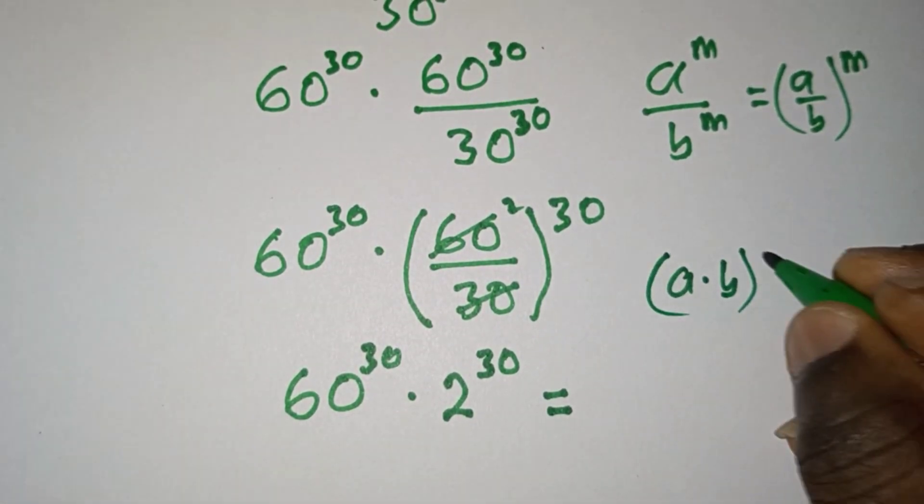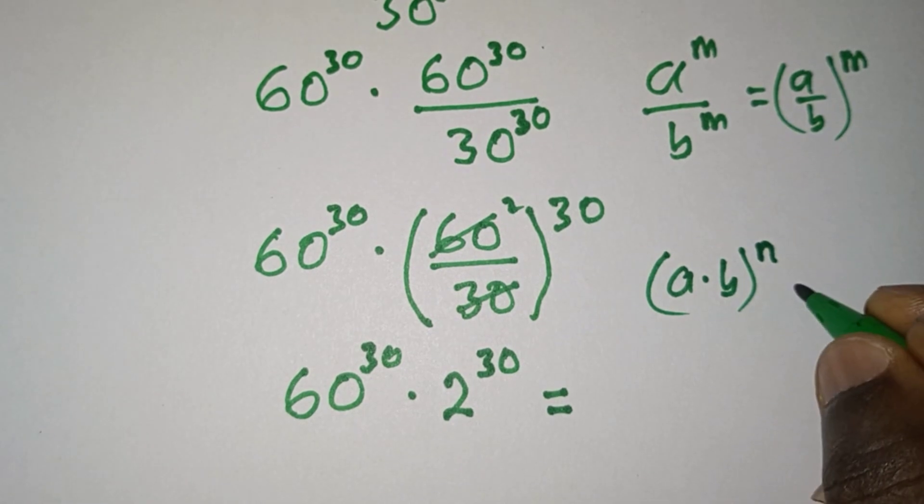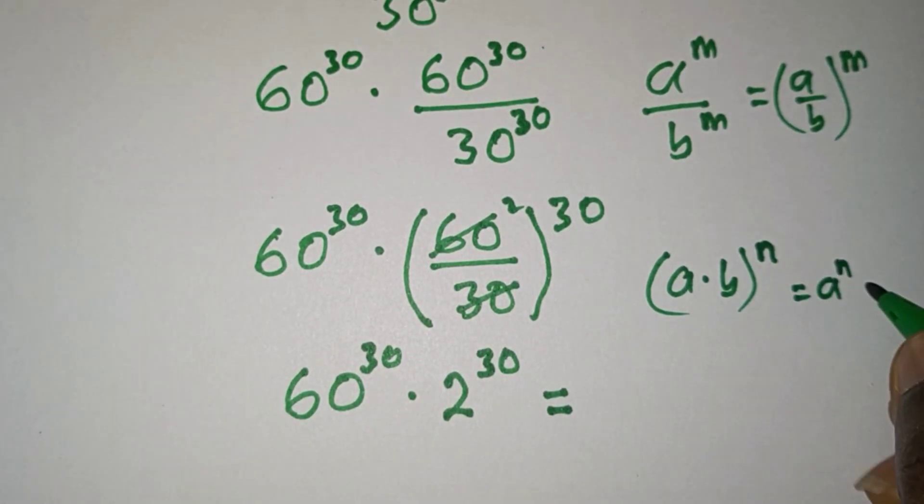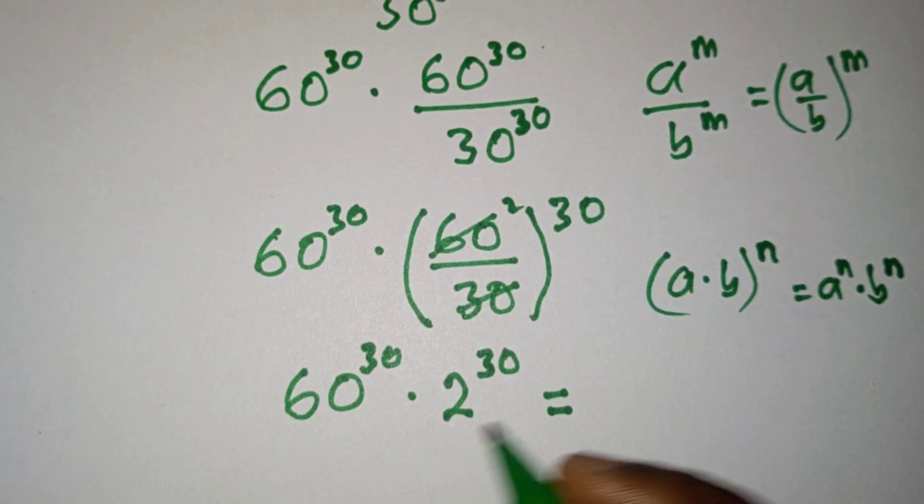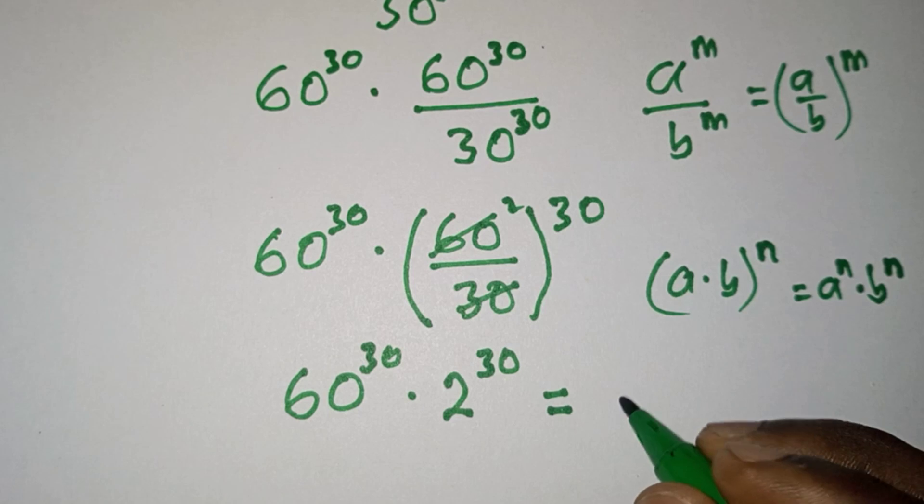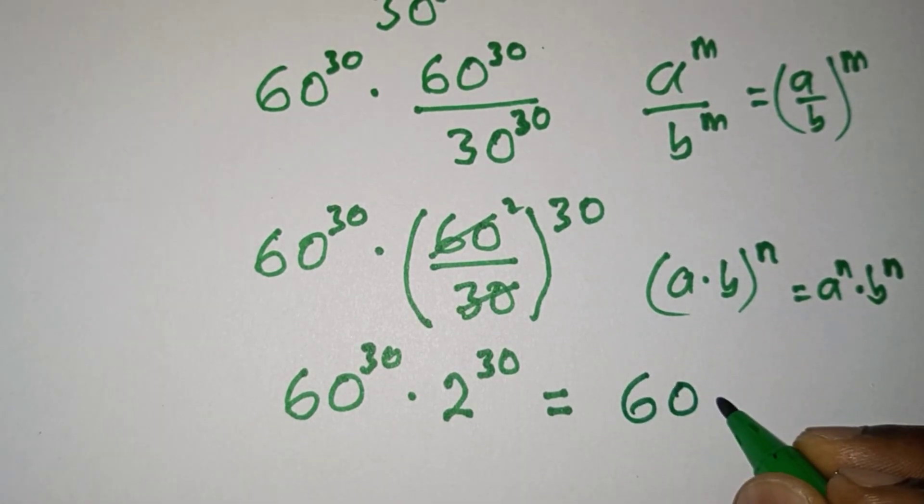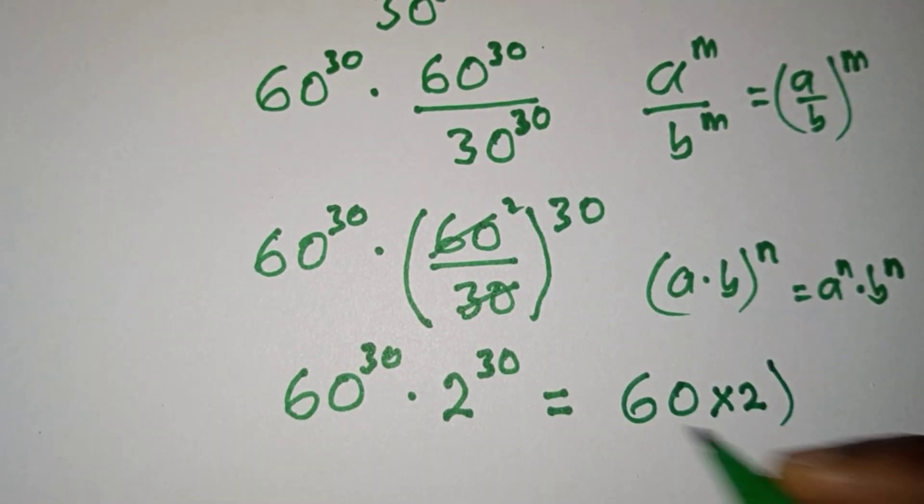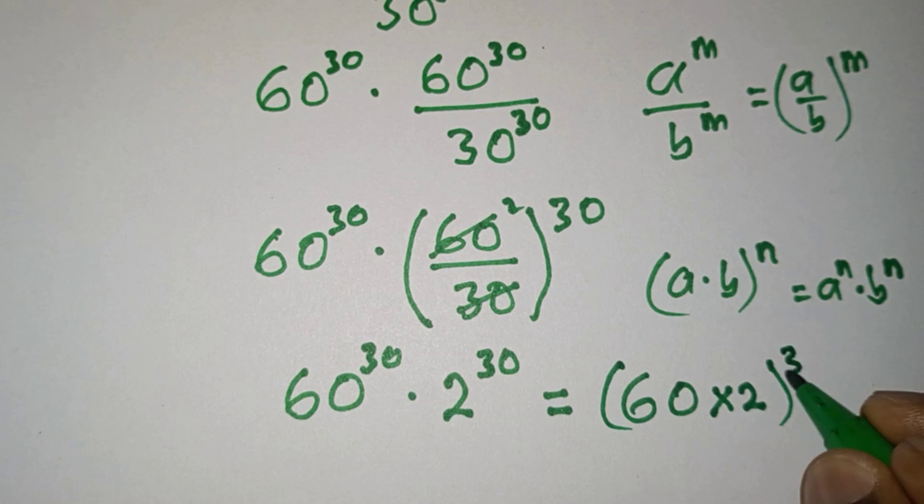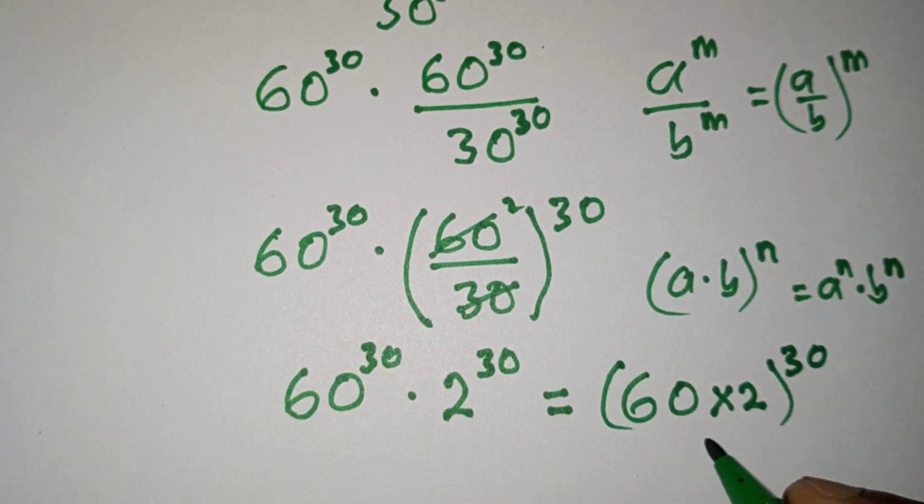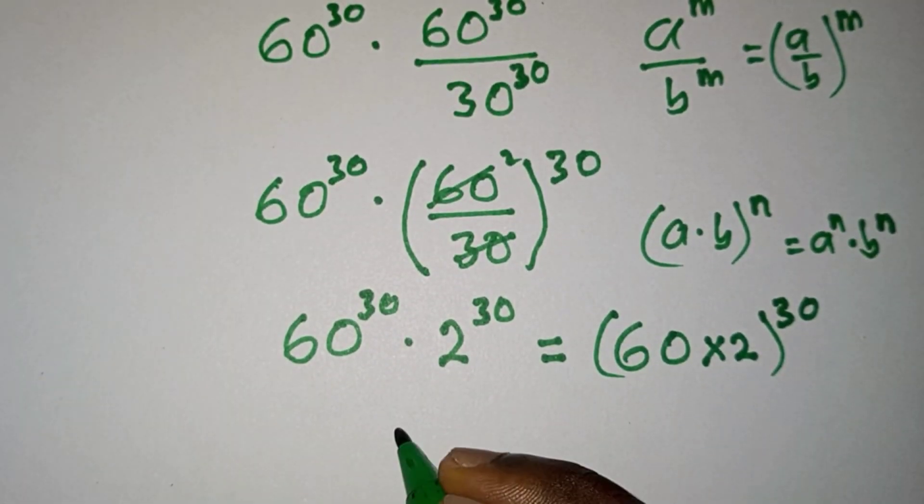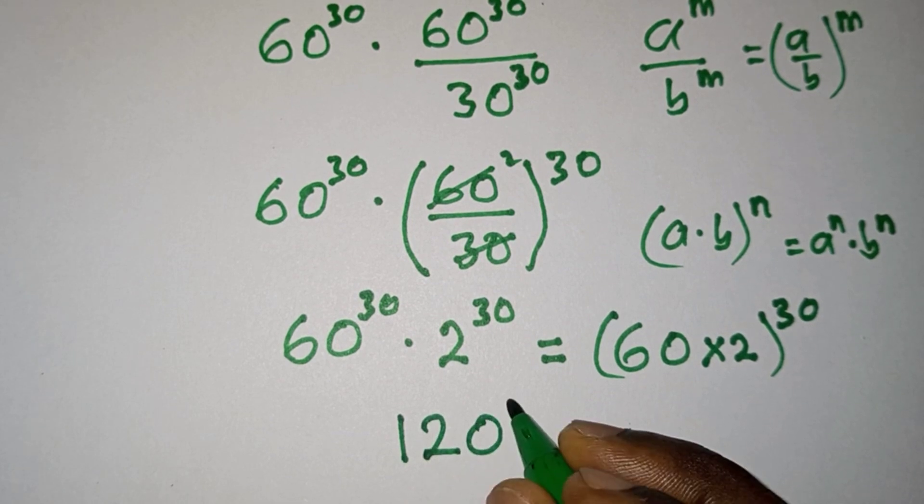Now note that a times b to the power n is the same as a to the power n times b to the power n. So we can write this in that form. We're gonna have 60 times 2 to the power 30. 60 times 2 is 120, so we're gonna have 120 to the power 30 as our final answer.